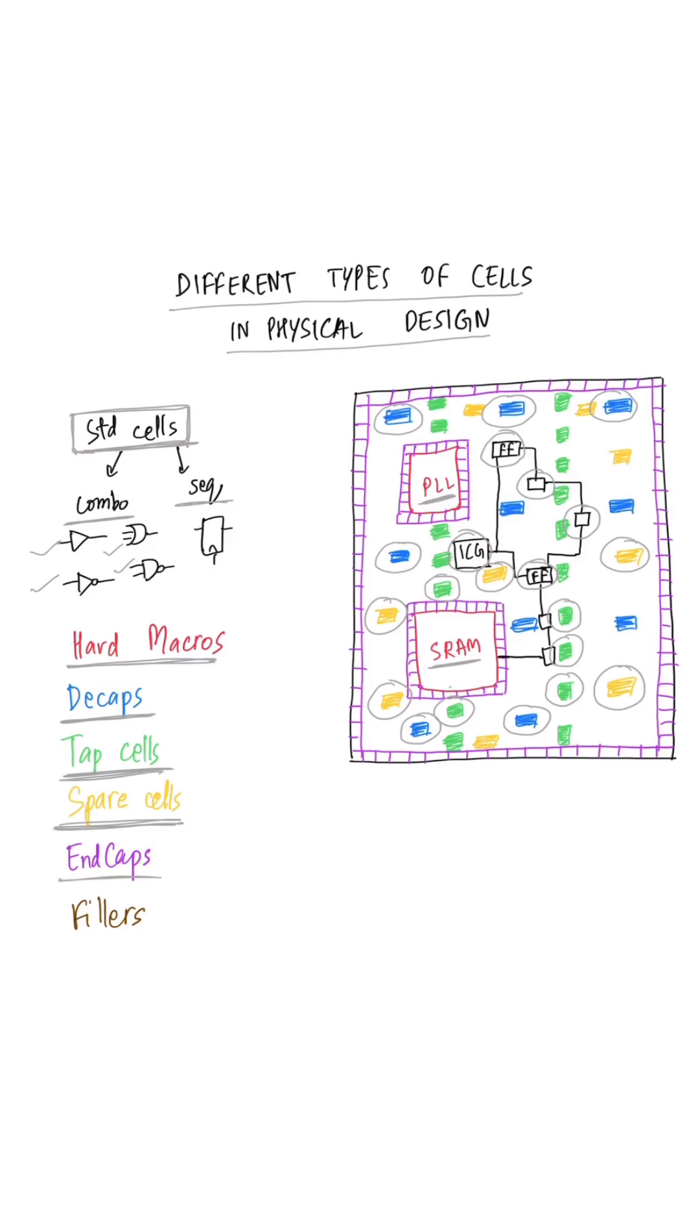Another category of physical only cells are the end-cap cells. End-cap cells are basically placed to mark the end of the standard cell row. So basically end-cap cells will be all around the edge of the partition or if there are hard macros in your design, we will place end-caps along the boundary of the hard macros.